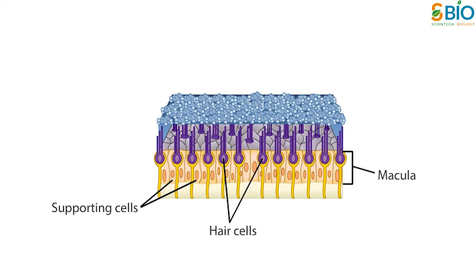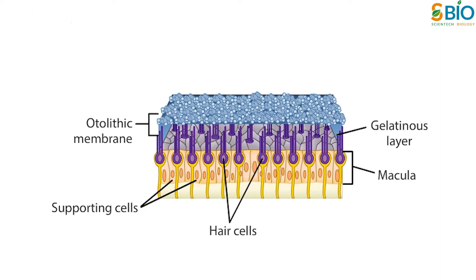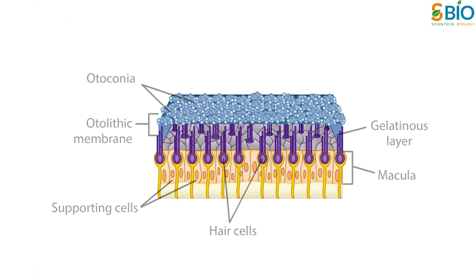Overlying the hair cells and their stereocilia is a gelatinous layer. Above this layer, a fibrous structure — the otolithic membrane — in which are embedded crystals of calcium carbonate called otoconia. The crystals give the otolith organs their name; otolith is Greek for ear stones. The otoconia make the otolithic membrane considerably heavier than the structures and fluids surrounding it.